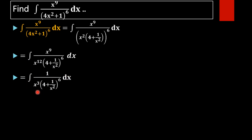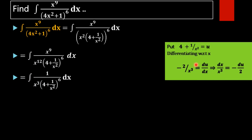For finding the value of this integral, we take 4 plus 1 by x squared equal to u. On differentiating with respect to x, the derivative of 4 is 0, and the derivative of 1 by x squared — that is x raised to minus 2 — gives minus 2 divided by x cubed, which equals du by dx. This implies dx by x cubed equals minus du by 2.